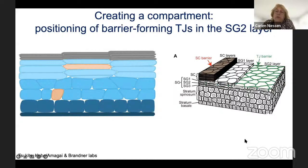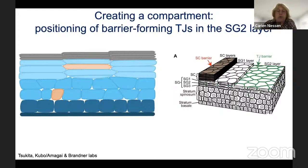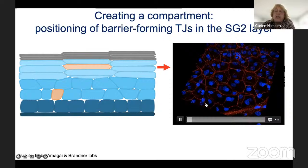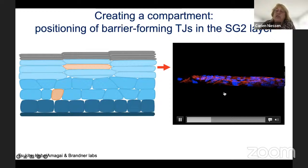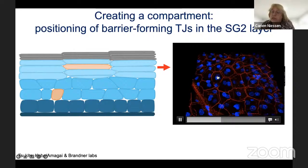Work from Kathy Green showed that desmoglein 1, expressed early in development and localized to the apical membrane domain of the basal layer, is important because simply expressing desmoglein 1 in simple epithelial MDCK cells actually results in multilayering — making a second epithelial sheet. This suggests these codes are really important to making a multilayered epithelial barrier. So how do you position the tight junctional barrier only in the stratum granulosum layer 2?